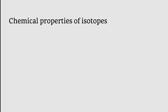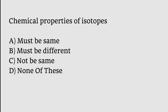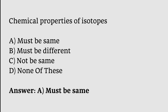The chemical properties of isotopes: must be same, must be different, not be same, none of these. The correct answer is option A. The chemical properties of isotopes must be the same.